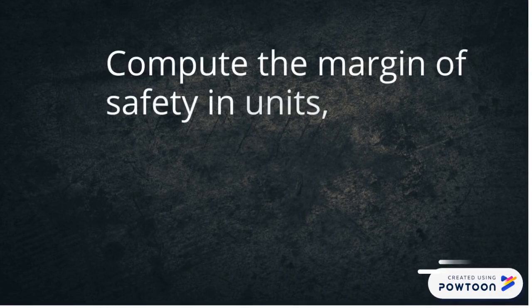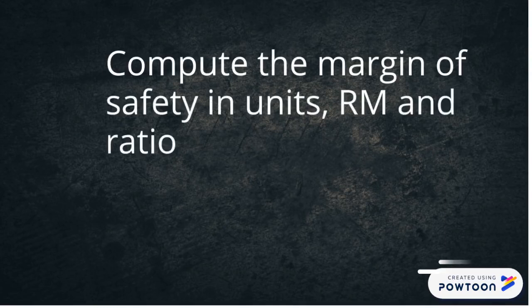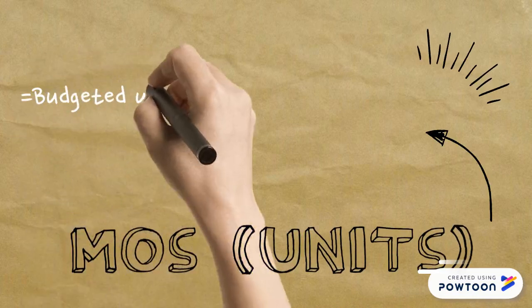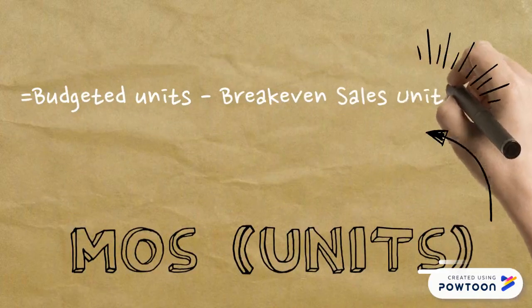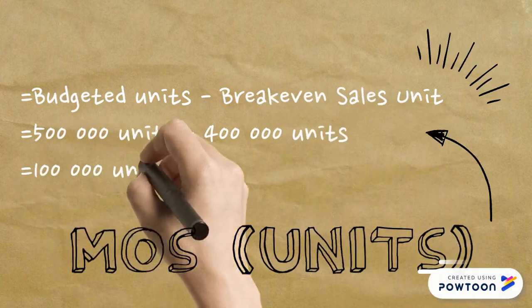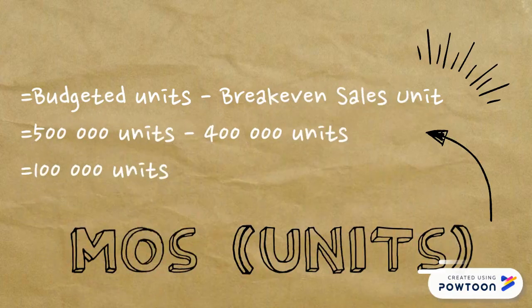For the next question, we are required to compute the margin of safety in units, RM, and ratio. To calculate margin of safety in units, we must subtract break-even units, which is 400,000 units, from budgeted units, which is 500,000 units, and we will get 100,000 units for the answer.